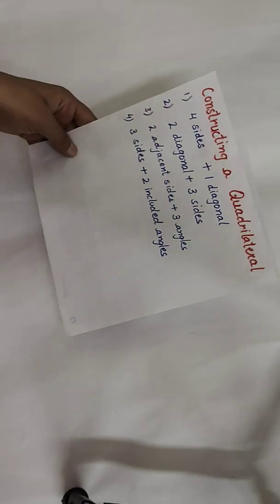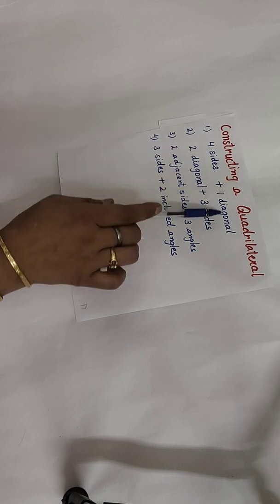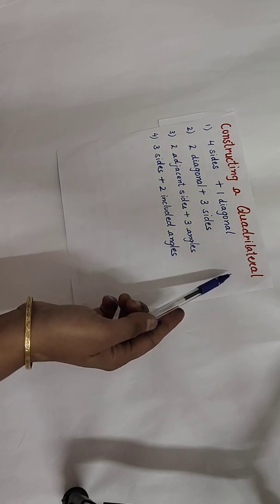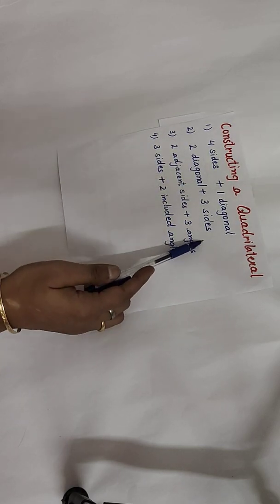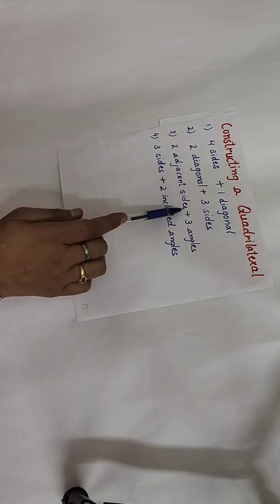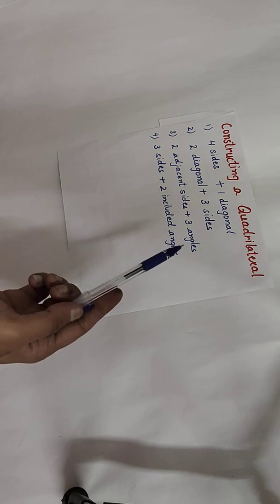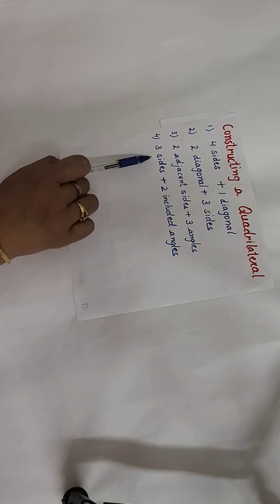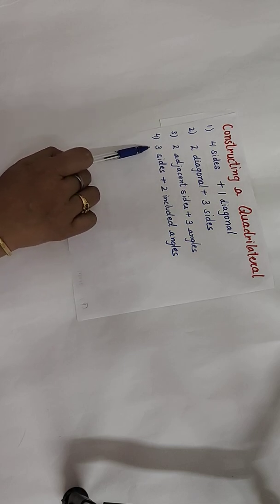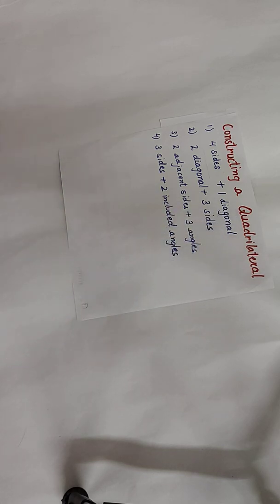In this chapter we are going to learn the construction of a quadrilateral using four different methods. First, with four sides and one diagonal. Second, with two diagonals and three sides. Third, with two adjacent sides and three angles. Fourth, with three sides and two included angles between those three sides. We will check in each case whether a unique quadrilateral can be constructed. Thank you.